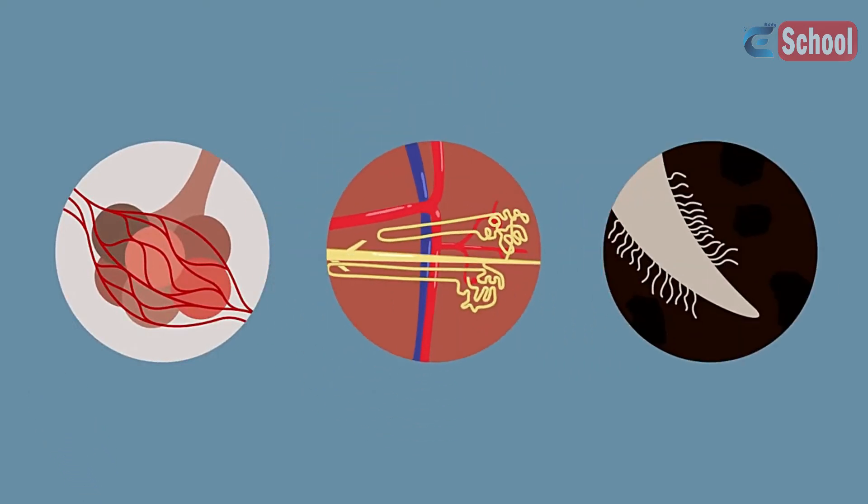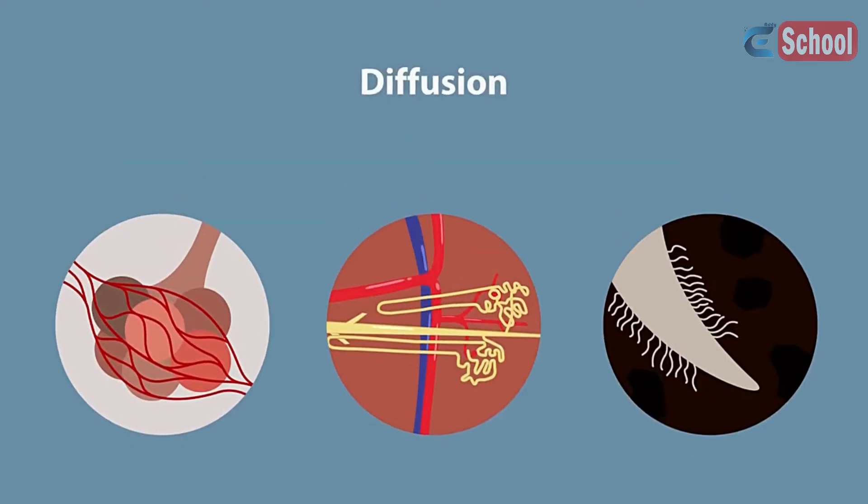Depending upon what is being exchanged and which direction along the concentration gradient things are traveling will determine whether diffusion, osmosis, or active transport will be used.